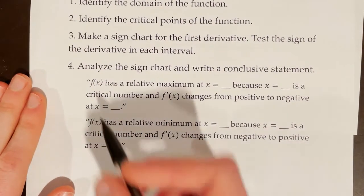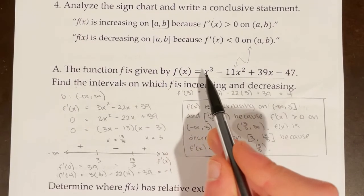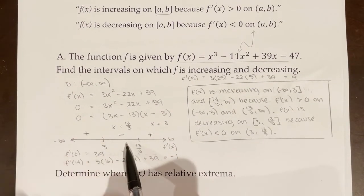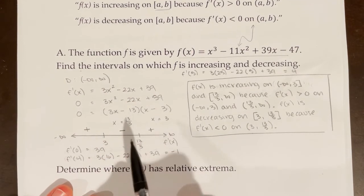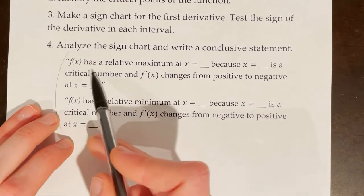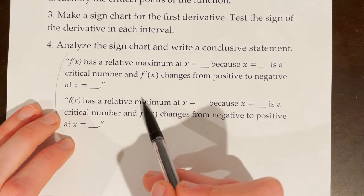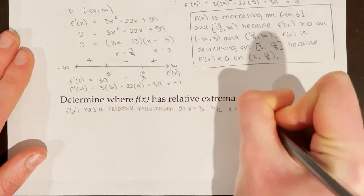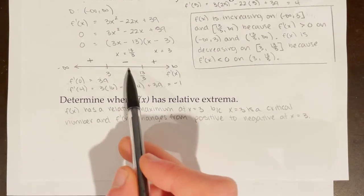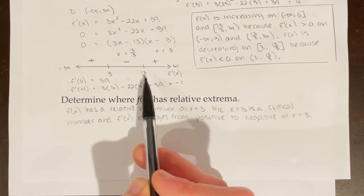Let's practice justifying our answer with that previous example. Looking at the same sign chart, we have a relative maximum at x equals 3 because x equals 3 is a critical number, and f prime of x changes from positive to negative at x equals 3. We also have a relative minimum at x equals 13 thirds because x equals 13 thirds is a critical number and the first derivative changes from negative to positive at x equals 13 thirds.